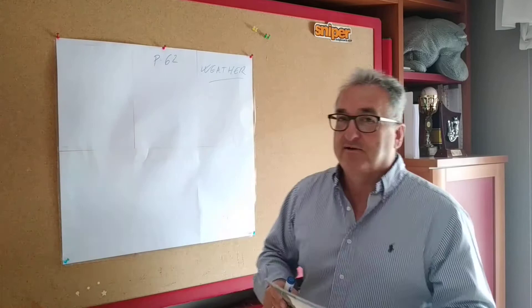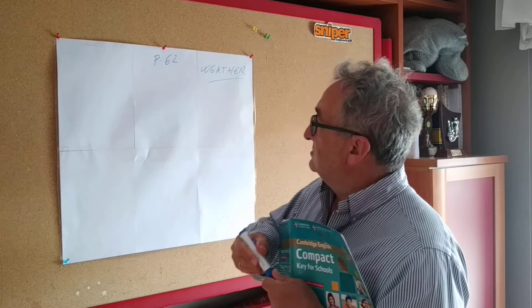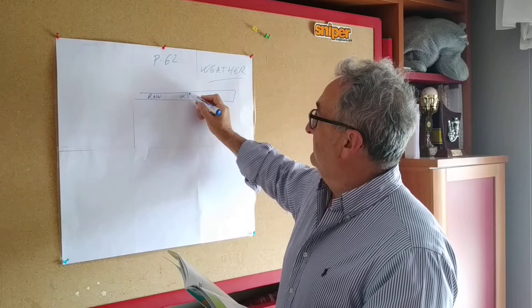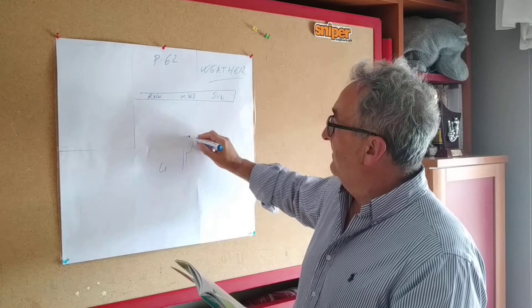Exercise 1. Vocabulary. You have a box with words: rain, winds, sun, and then here you have some drawings.